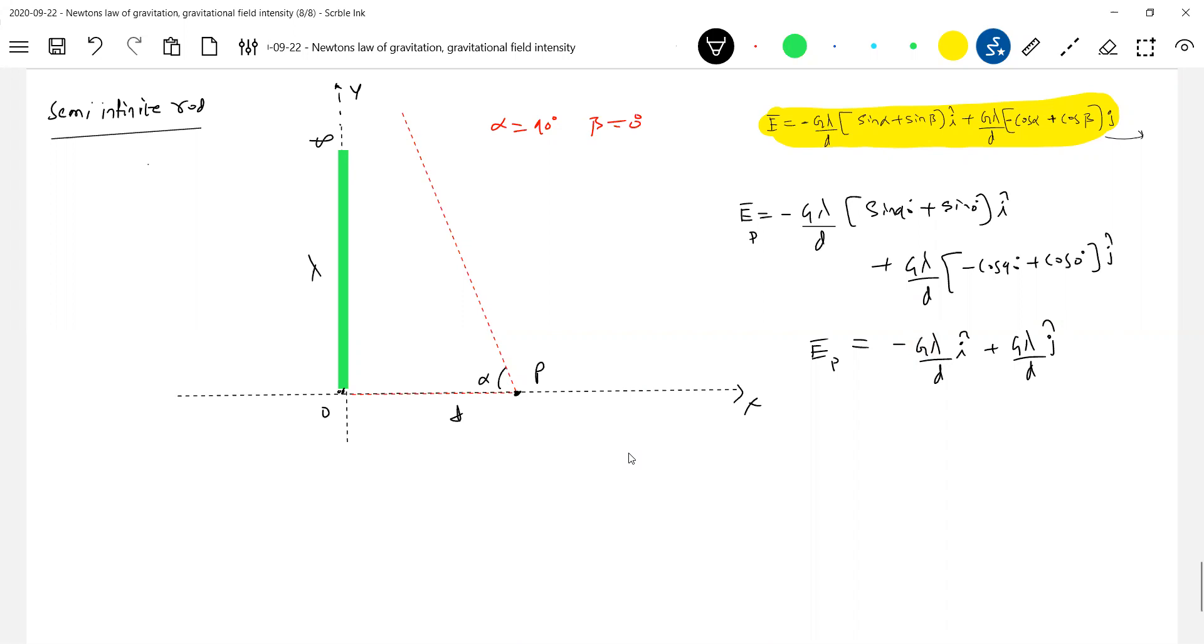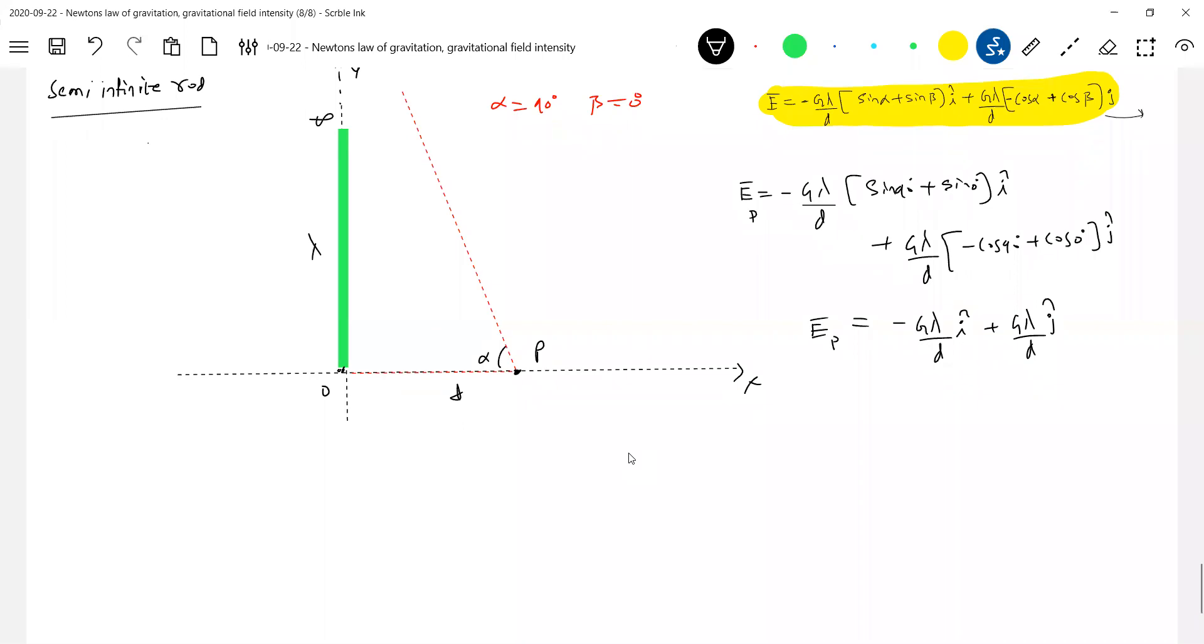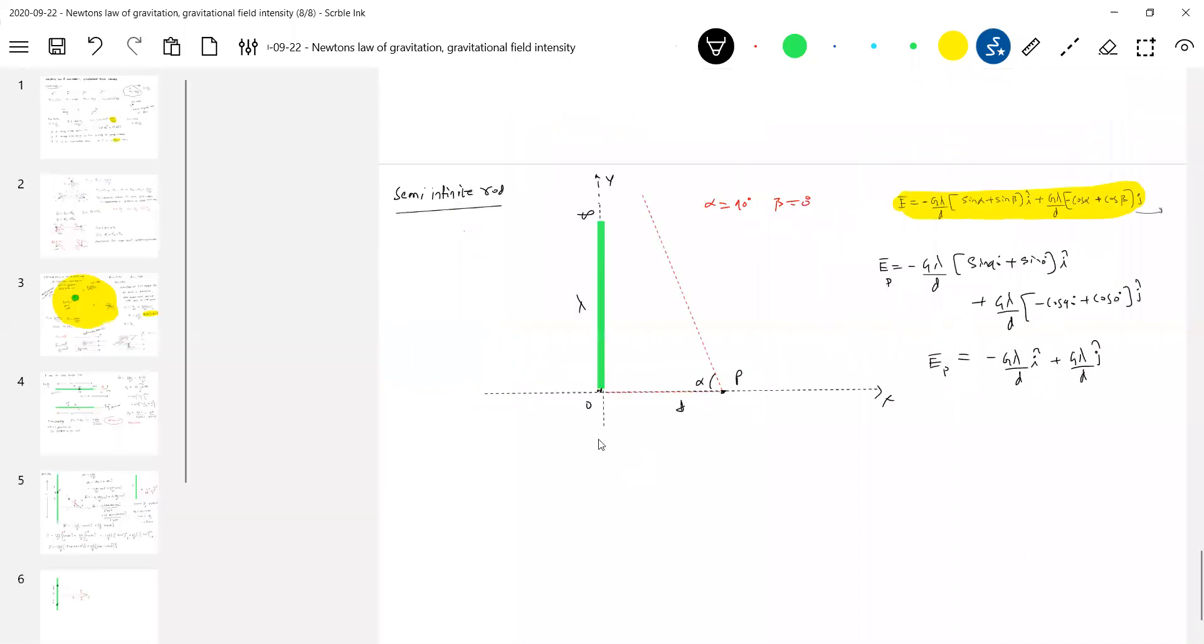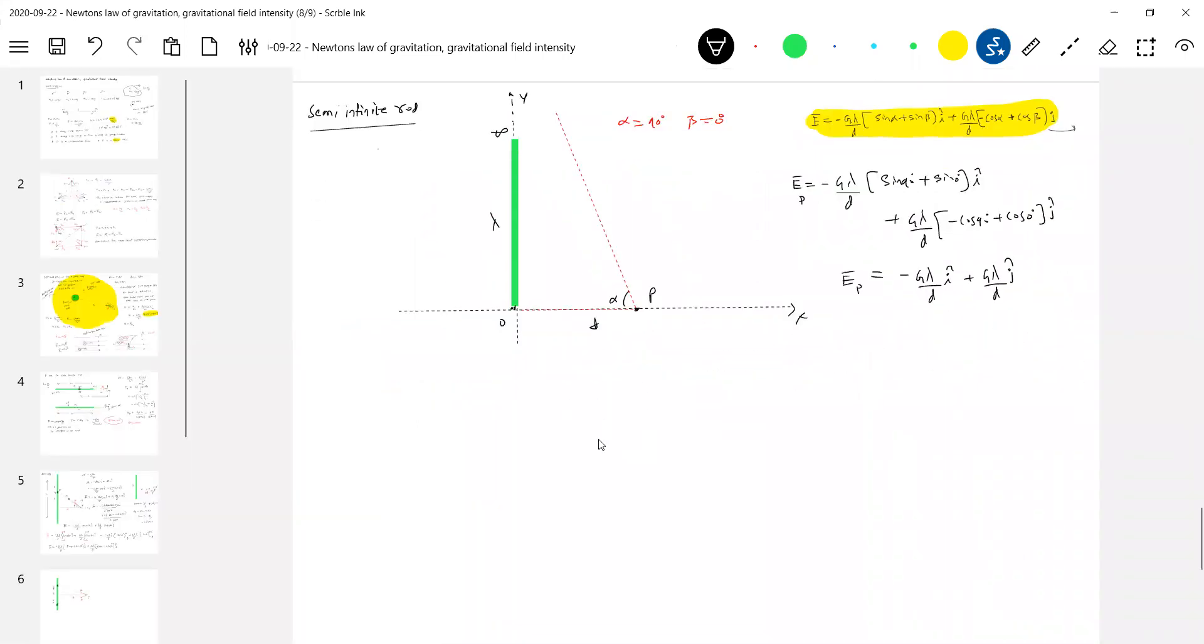Look at the i component - it will be perpendicular to the rod, and the j cap parallel to the rod. Therefore, if I get a semi-infinite rod, rather than in terms of i cap j cap, let's generalize it.